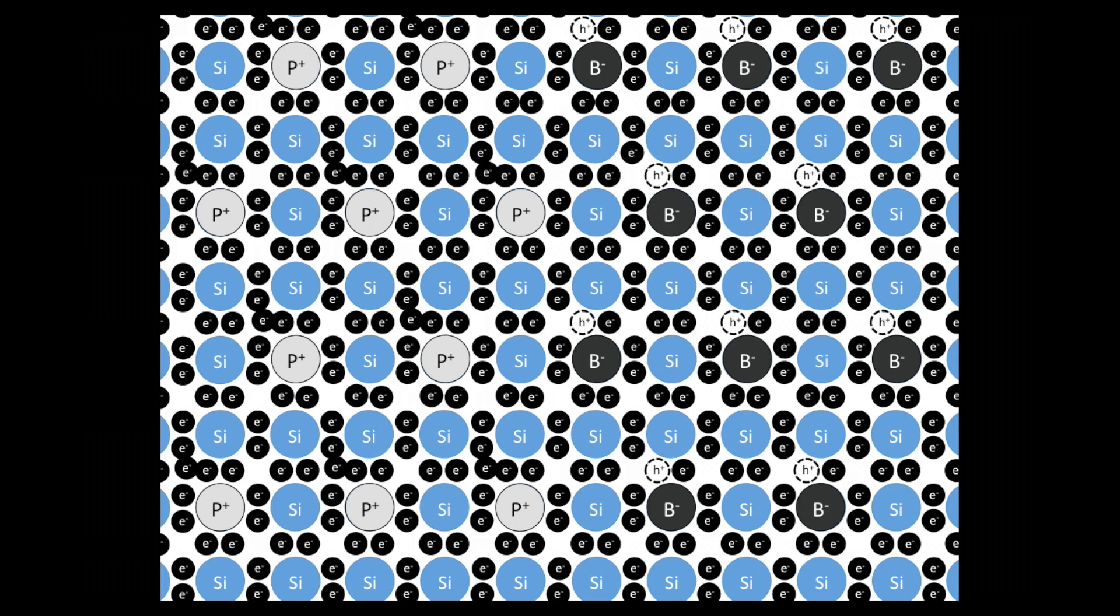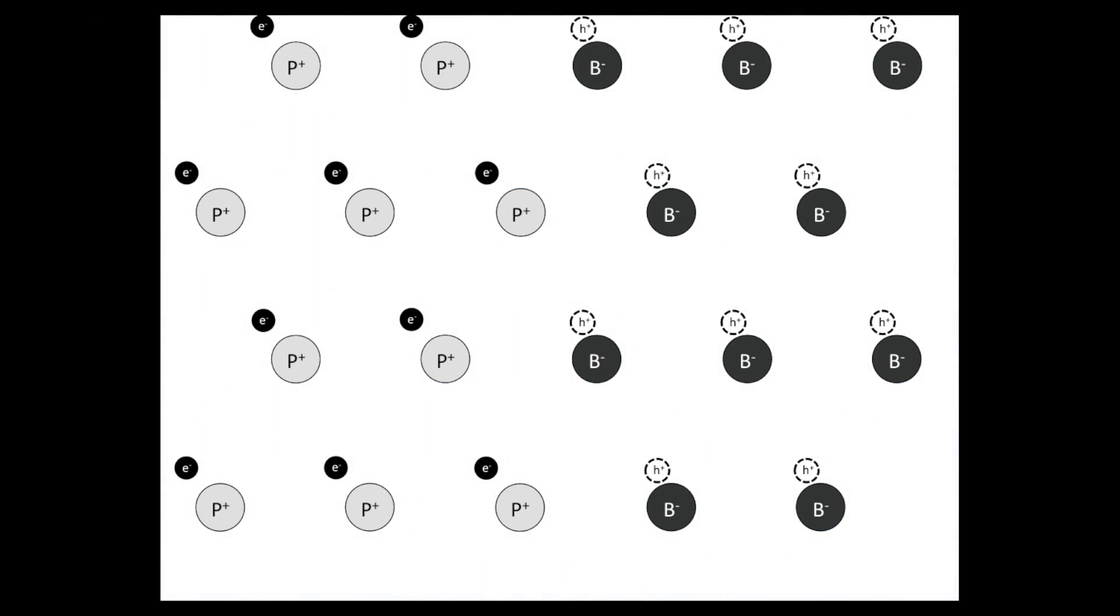To focus on our dopant atoms and the mobile charges they introduce, we'll fade out the silicon lattice. Recall that phosphorus atoms introduce static positive charges and mobile negative charges, while boron atoms introduce static negative charges and mobile positive charges. All the mobile charges are free to move around at random, a process known as diffusion.